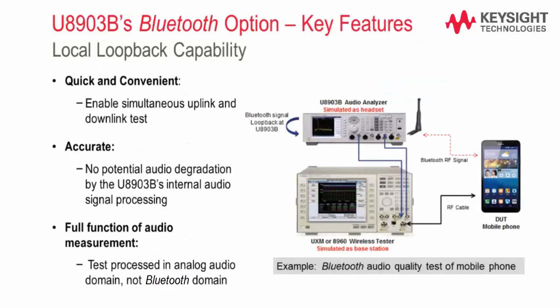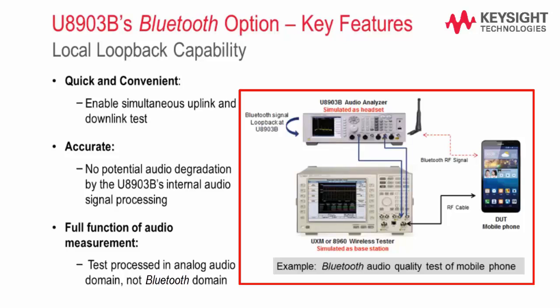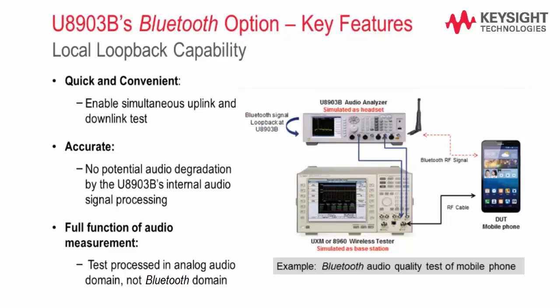It also comes with a local loopback capability. This feature is useful especially in the Bluetooth audio quality test of mobile phones. When the loopback feature is enabled on the U8903B, any Bluetooth RF signals originating from the mobile phone will be looped back within the U8903B and returned to the mobile phone. With this test setup, audio measurements on both uplink and downlink can be done simultaneously.